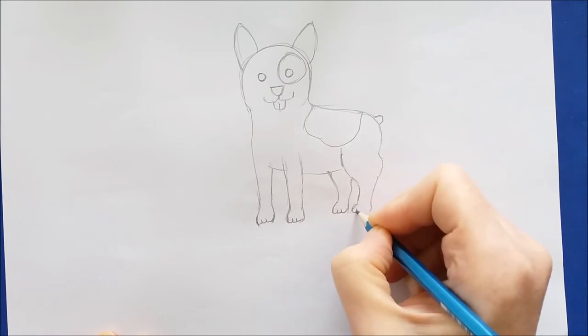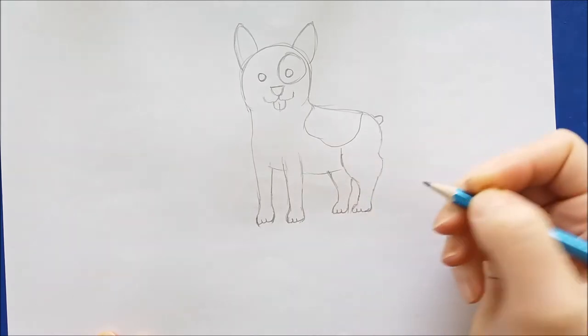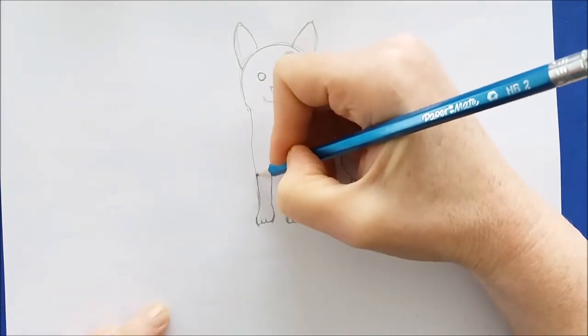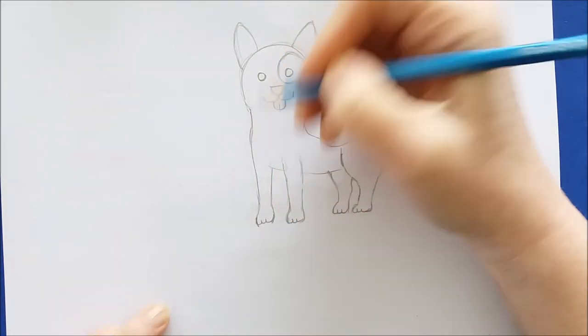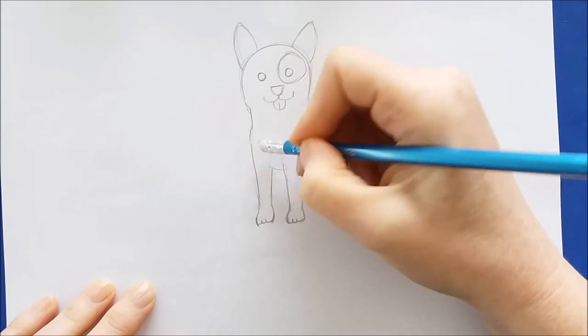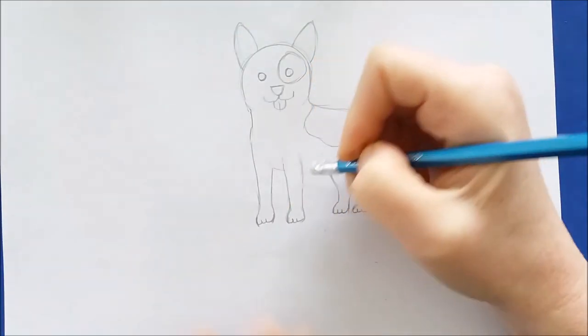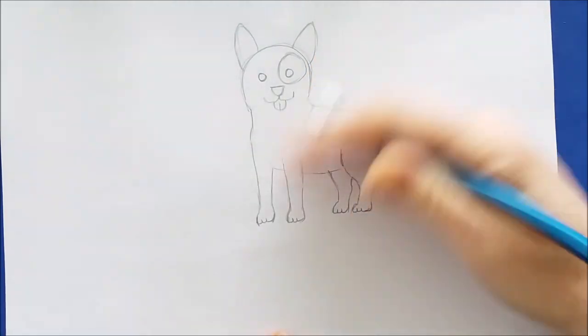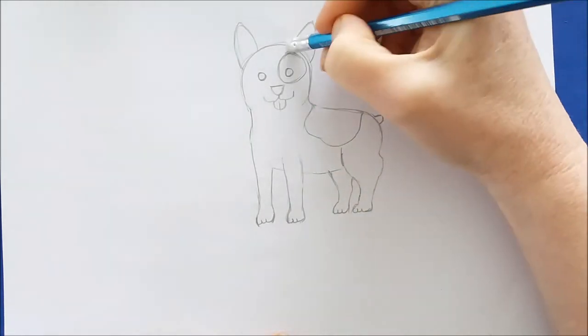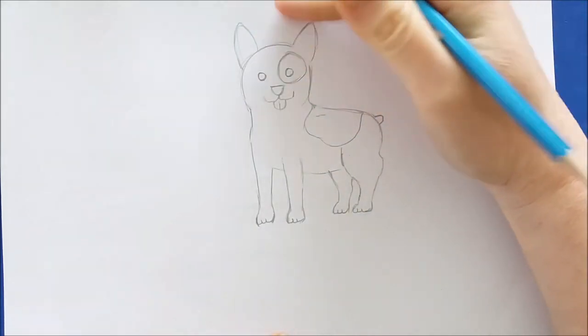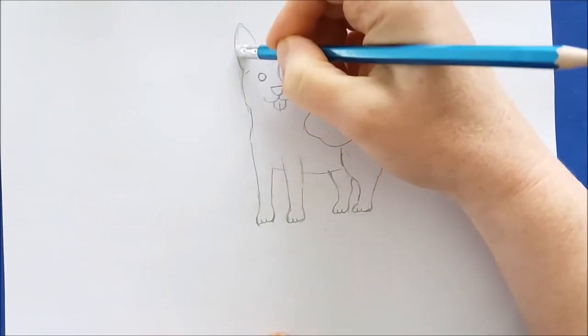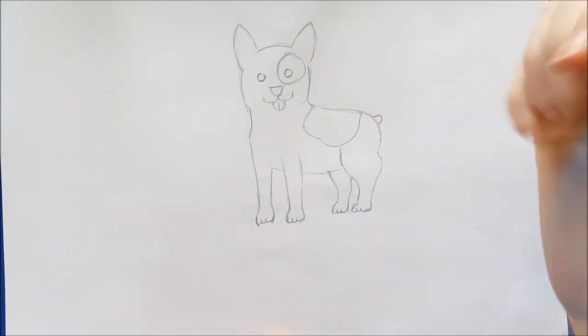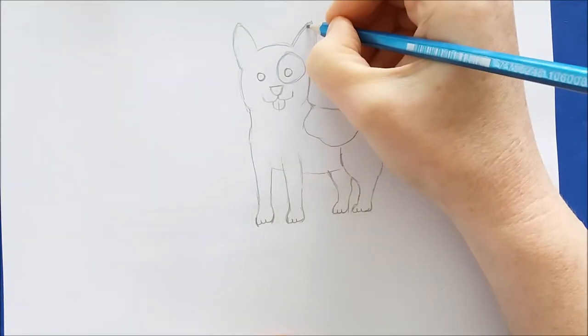Once I have the spot finished, I'm going to add some details to our Bulldog's toes and outline the Bulldog just a little bit more before I get ready to color him. I'll give some details to his ears, his toes, and his spots. Then we'll outline this little guy and color him in really cute.